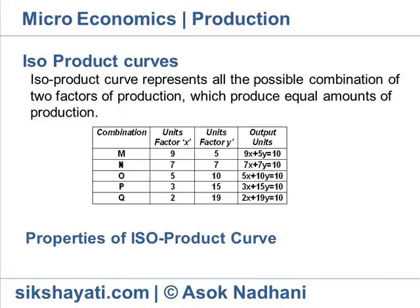Isoproduct curves represents all the possible combinations of two factors of production which produce equal amounts of production. A producer is indifferent to all these combinations.